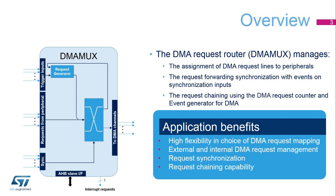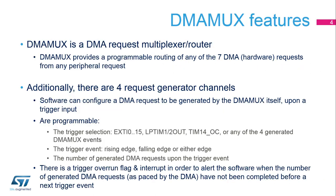The DMA-MUX supports two interrupt request outputs. DMA-MUX registers are accessed through the AHB slave interface. The DMA-MUX is used to map the peripheral requests onto the seven available DMA channels, and this mapping is programmable.